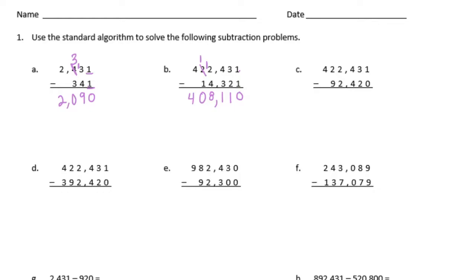C: 422,431 minus 92,420. 1 minus 0 is 1, 3 minus 2 is 1, 4 minus 4 is 0, 2 minus 2 is 0. 2 minus 9 — we cannot take 9 away from 2, so I'm going to borrow from the 4 and make it a 3, and this becomes a 12. 12 minus 9 is 3, and 3 minus nothing is 3. So we get 330,011.